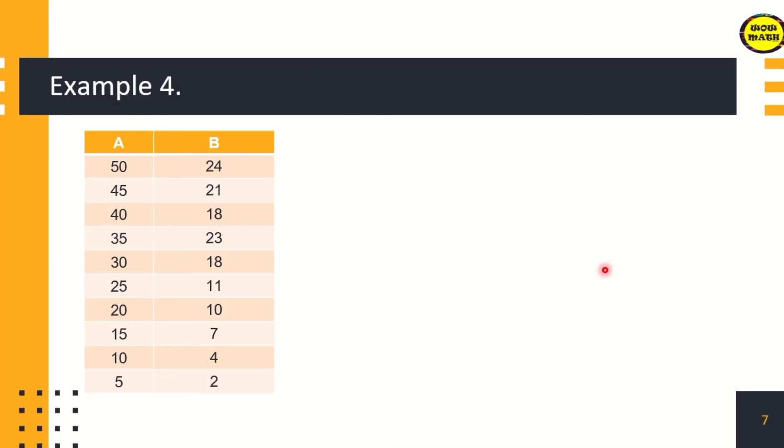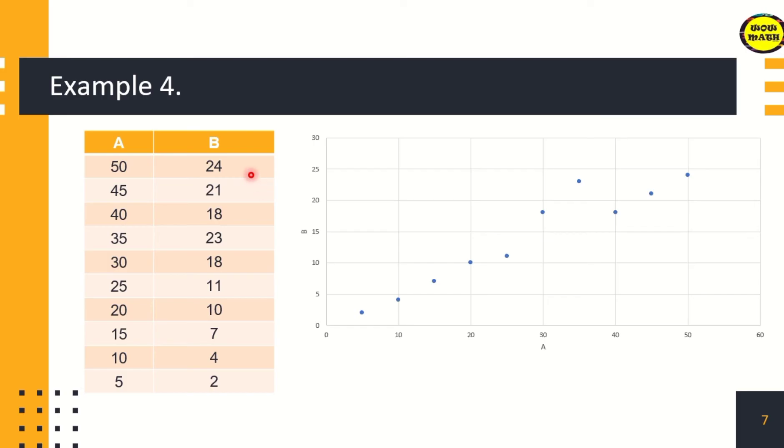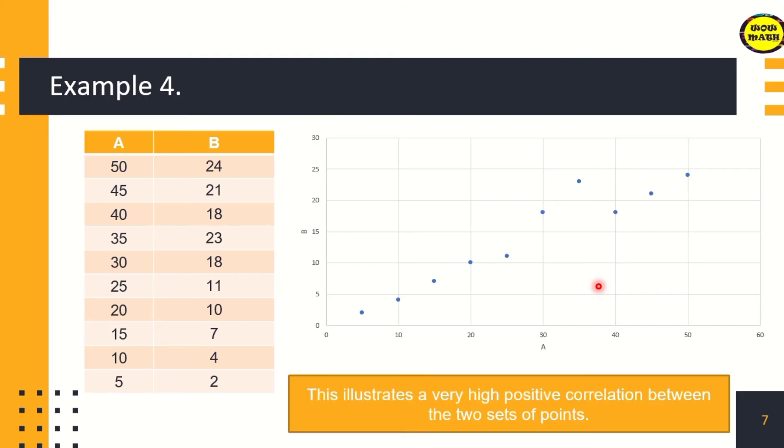If we try to construct a scatter plot using Microsoft Excel given the two columns A and B, we get this result. You can check using your Microsoft Excel. This result after constructing a scatter plot means it's a very high positive correlation between the two sets of points. Notice it's not a straight line—the dots are scattered—but the movement of the dots is still increasing going to the right.